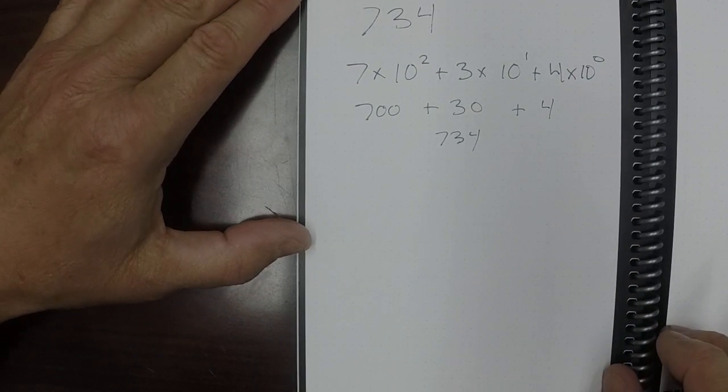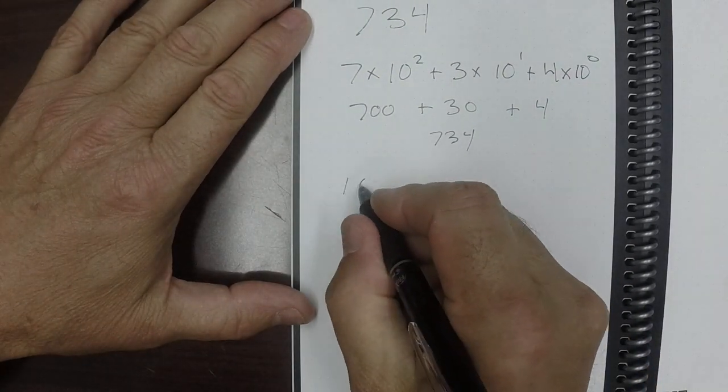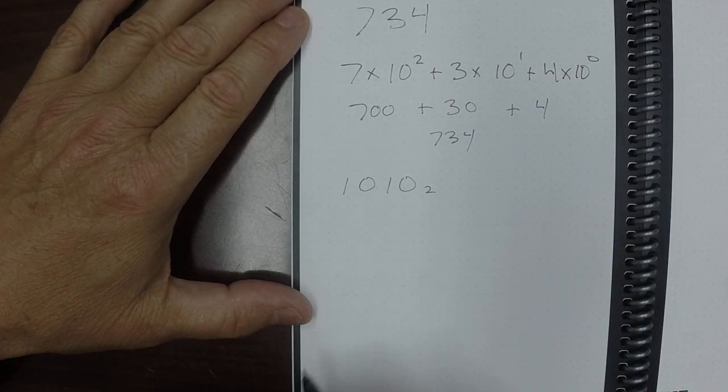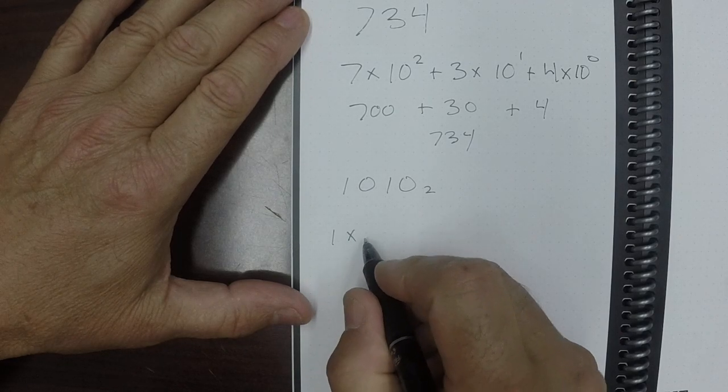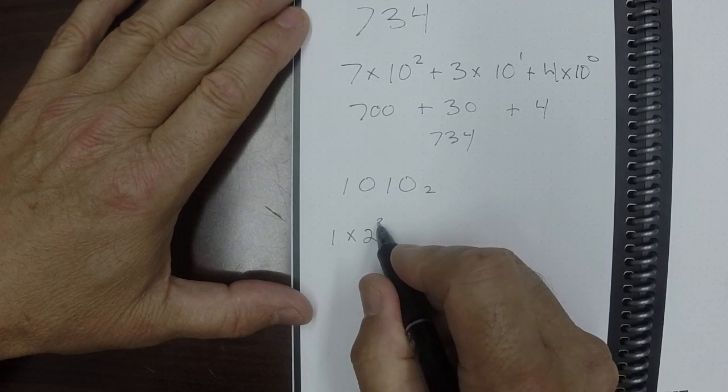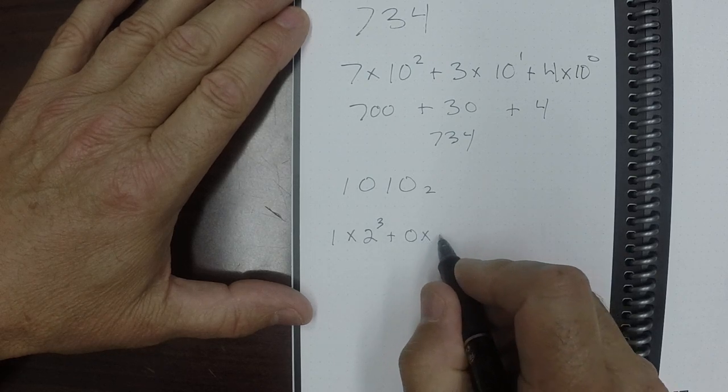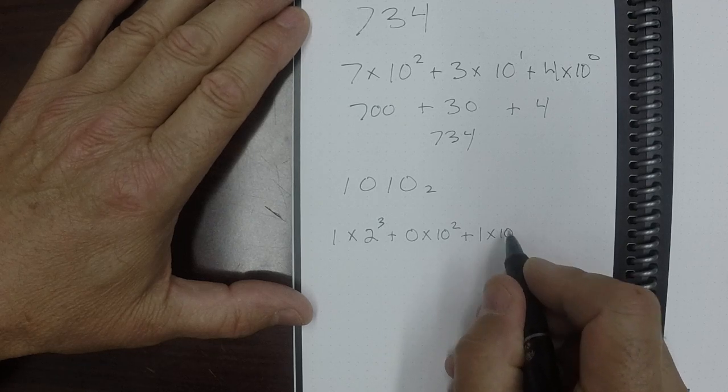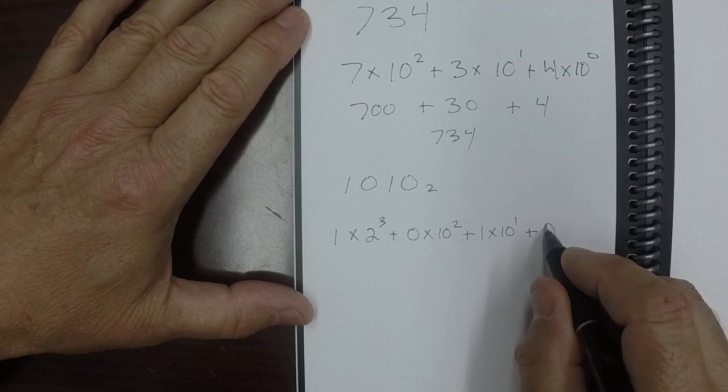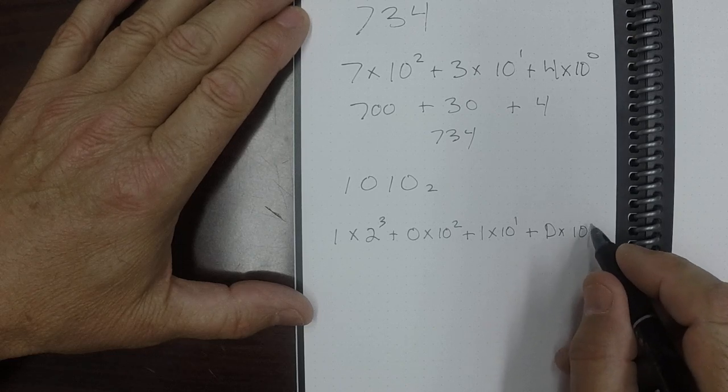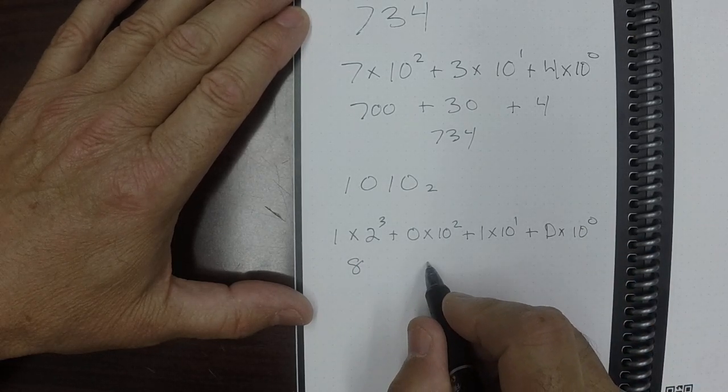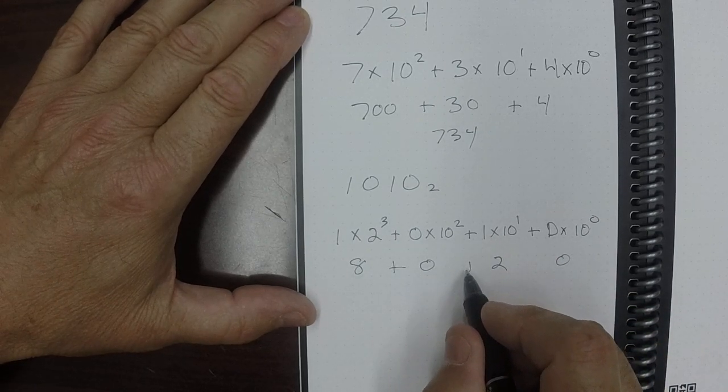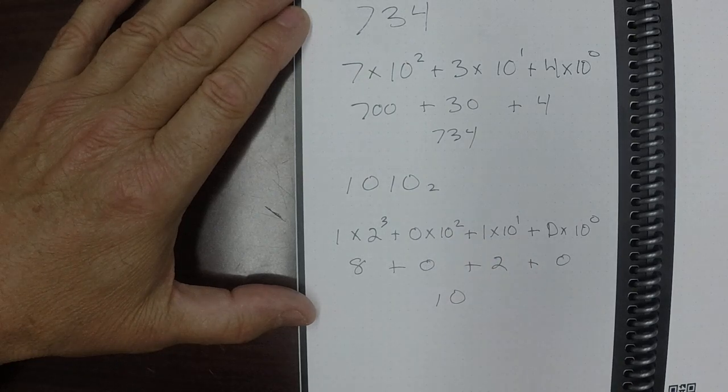All right, well now let's take the number 1, 0, 1, 0 in binary base 2. That is 1 times 2 to the third plus 0 times 2 to the second plus 1 times 2 to the first plus 0 times 2 to the 0. This is 8, that is 0, that is 2, that is 0, so the number is 10.